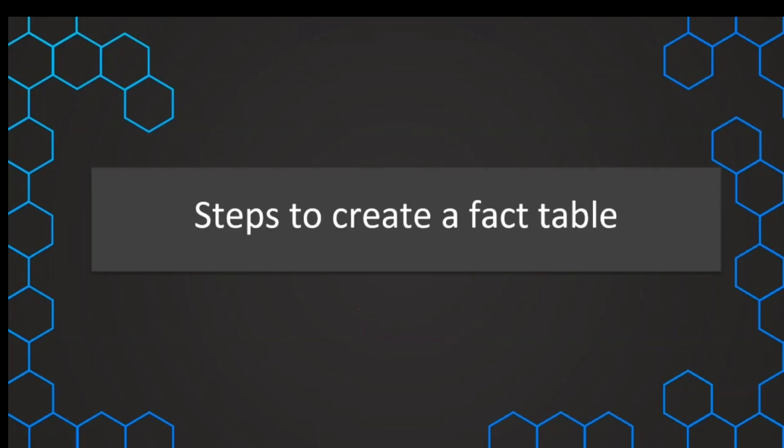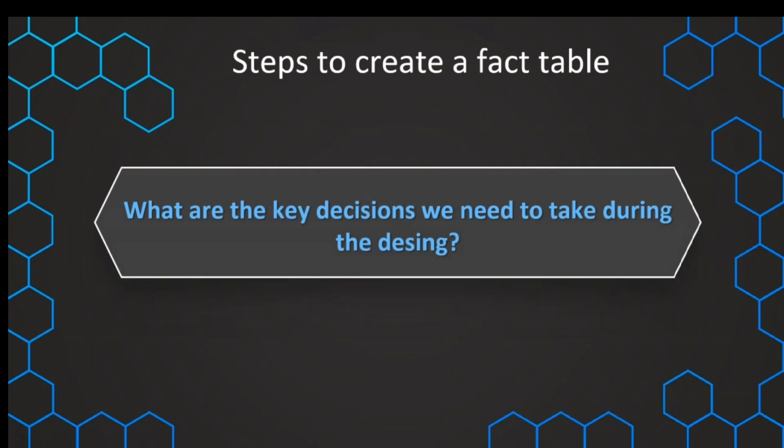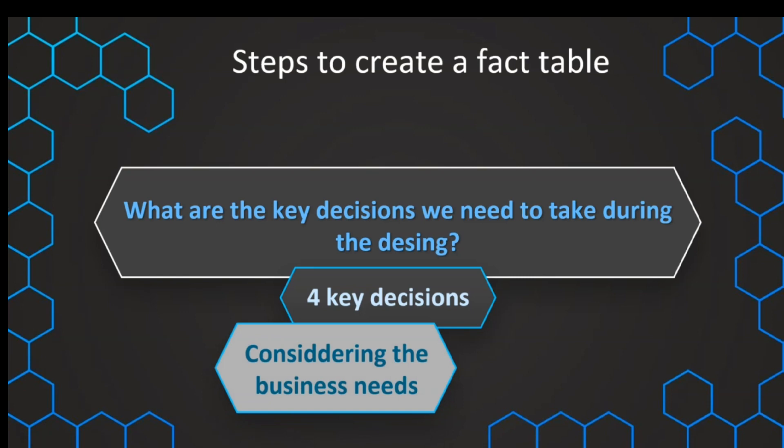Now, let's get practical and talk about the steps that we need to take when we want to design our fact table. Usually, there are a few key decisions that we need to take when we want to design our fact tables. Basically, or luckily, there are just four key decisions that we need to take when we want to design our fact tables. And we take those key decisions by answering questions about our business needs. So when we want to make those decisions, we need to consider the business needs, and with that we can answer or take those key decisions.